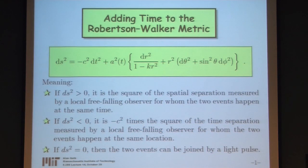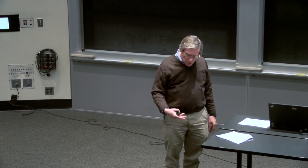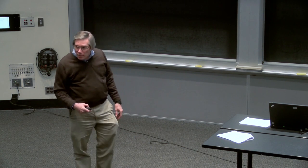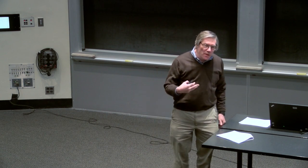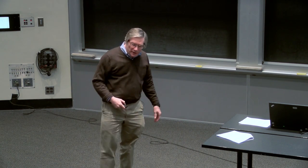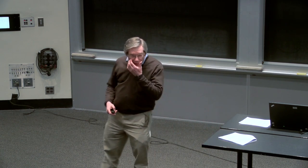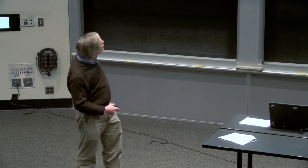Last time, at the beginning of the lecture, we talked about how to add time into the Robertson-Walker metric. For a space-time metric ds squared, the meaning is closely analogous to the meaning it would have in special relativity. The main difference is that in special relativity, we always talk about inertial frames of reference, whereas in general relativity, the concept of an inertial observer is not so clear cut. Observers for which there are no forces acting on them other than gravitational forces are called free-falling observers, and they play the role of inertial observers.